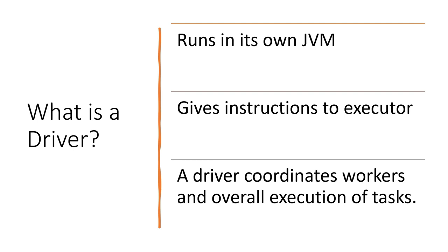Coming on to the components — the next question is what is a driver? When we look at Spark, we would see a driver, executors, tasks, and partitions. A driver is a program that runs in its own JVM. Its job is to run the execution, give instructions to different executors, and coordinate the work that executors are doing. The driver is like a coordinator — a police inspector overseeing everything at the cluster level. Whatever program we write in Spark, the driver makes sure things are done properly by the executors who are actually running the code.